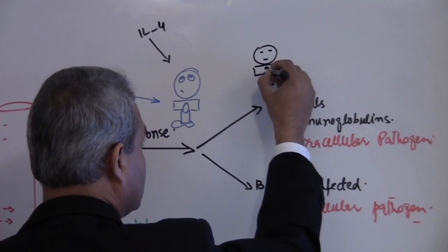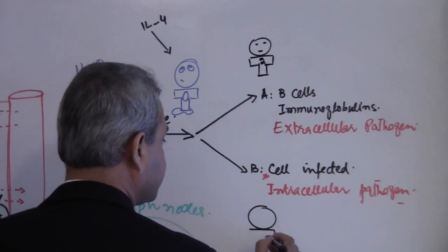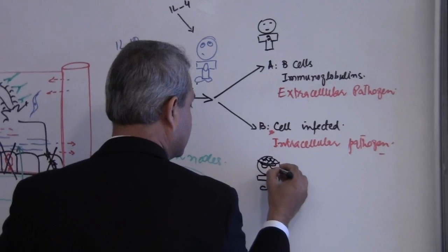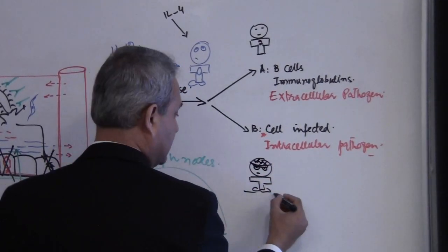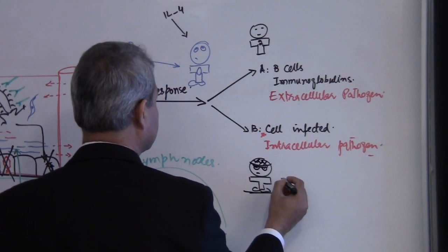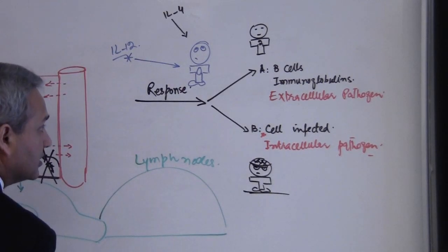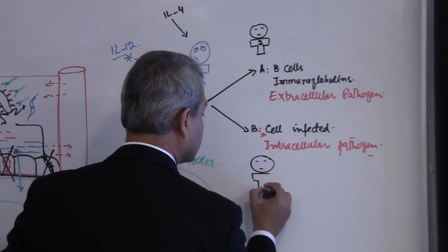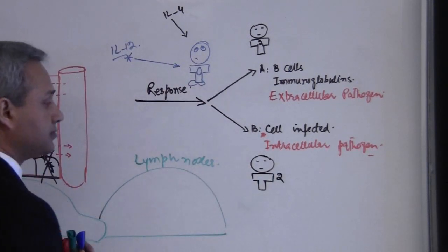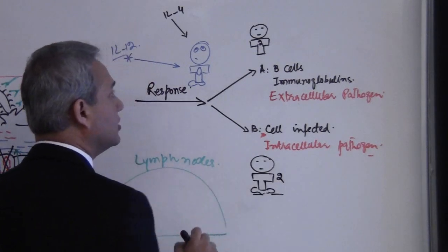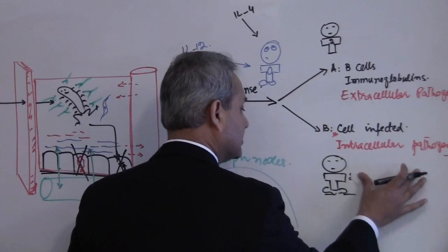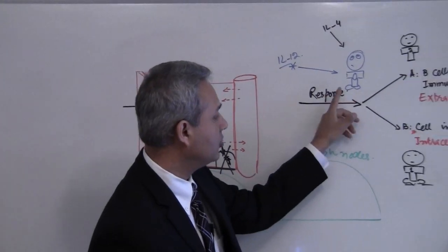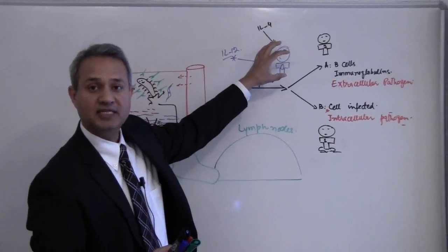this T cell will either become a T helper 2 or it will become a T helper 1, this is our cytotoxic T cell. So we either get a T helper 1 or we get a T helper 2. T helper 0 becomes 1 or 2 depending upon what messages are coming to it.